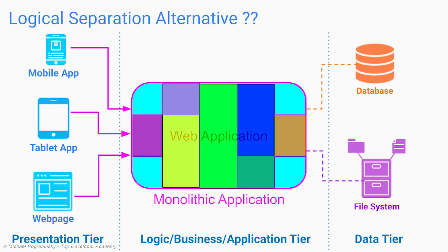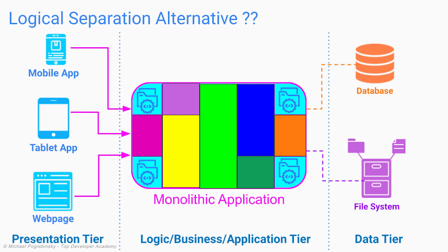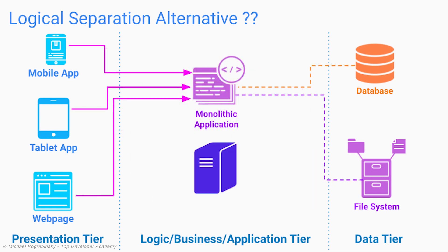It's important to call out that logically separating the monolithic application into layers, modules or even libraries can help only so much. But at the end of the day, all those different modules are still tightly coupled together, we're still constrained to using the same technologies and programming languages, and the application still needs to be deployed as a single runtime unit. So now that we fully understand the problem we're trying to solve and the conditions for considering another architectural approach, we're ready to explore the alternative to monolithic architecture, which is microservices architecture.